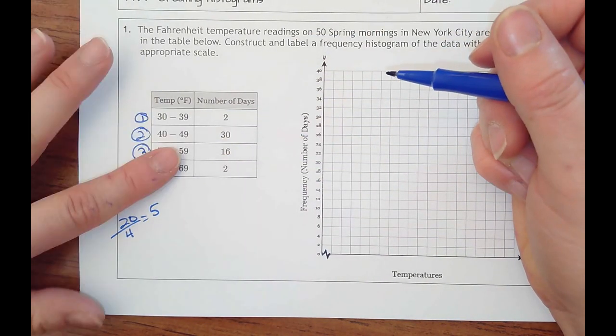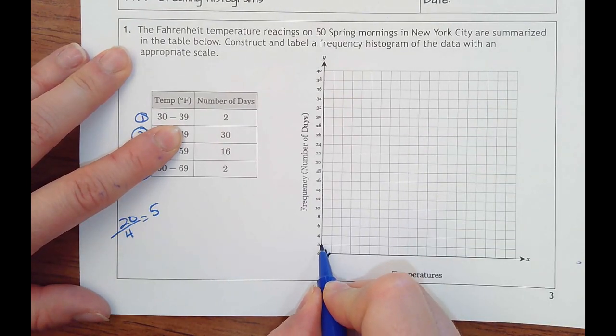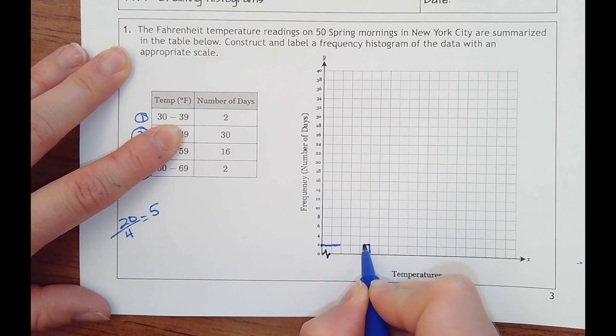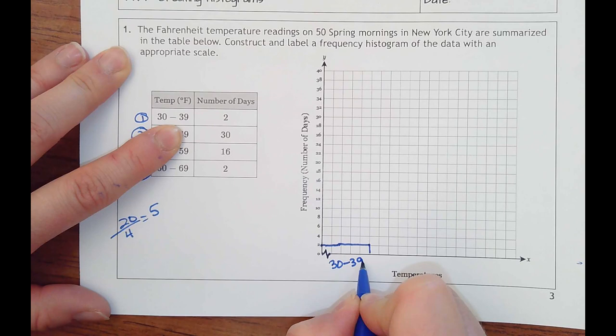So let's go ahead and say for the first box it's going to be up to two. So for two days I'm going to go one, two, three, four, five boxes wide. And then put that temperature range on the bottom of the box.